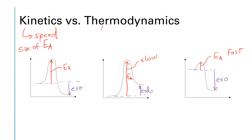Thermodynamics tells us whether a reaction is likely to happen — exothermic reactions tend to be more likely to happen than endothermic ones, but that's not the whole story. When we get to our chapter on thermodynamics, we'll learn about Gibbs free energy, which takes into account both the enthalpy change and the entropy change. Even if thermodynamics says a reaction can take place, the kinetics may say it goes so slowly it's not observable — you might have to wait millions of years to see it happen.